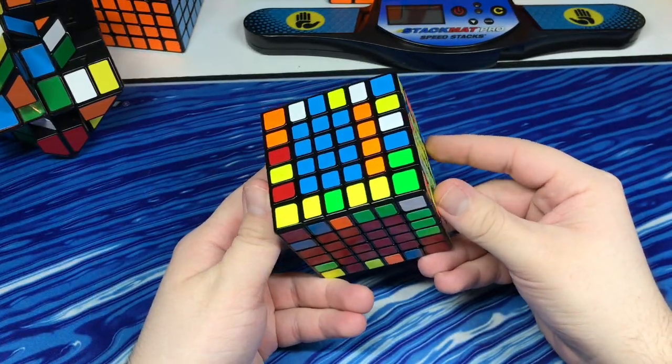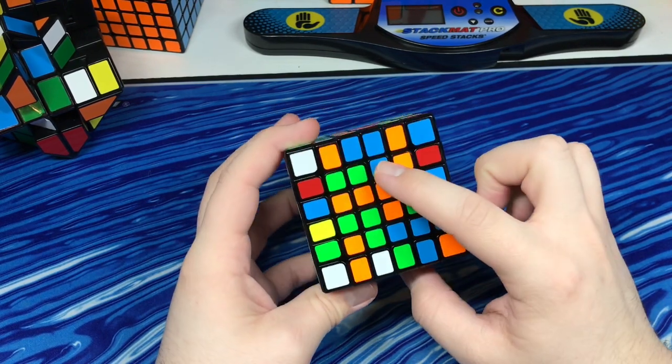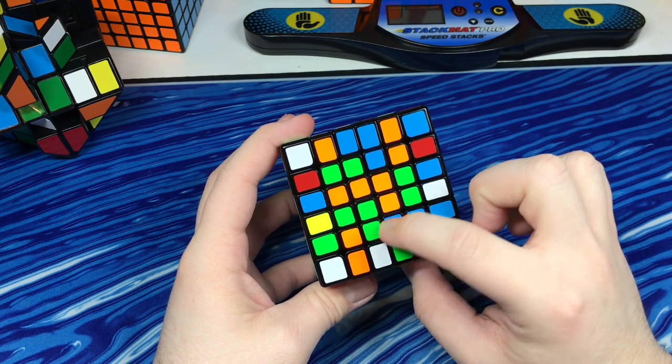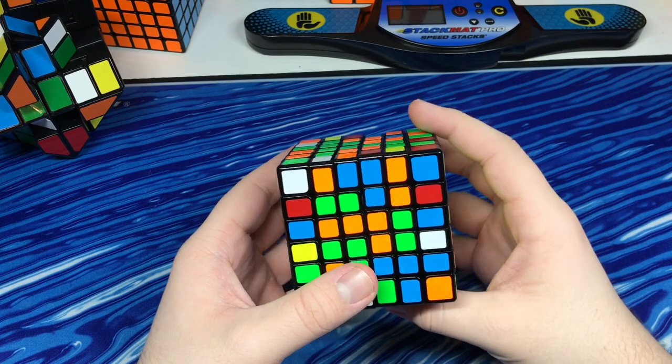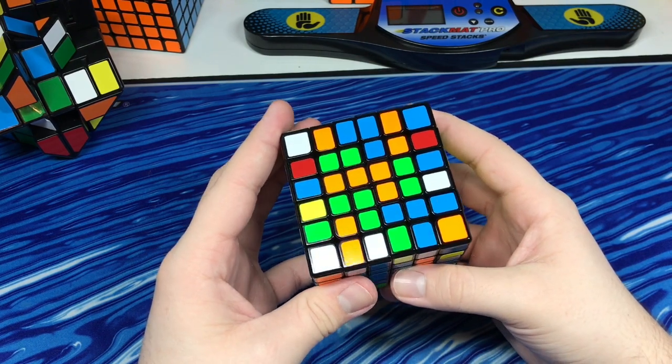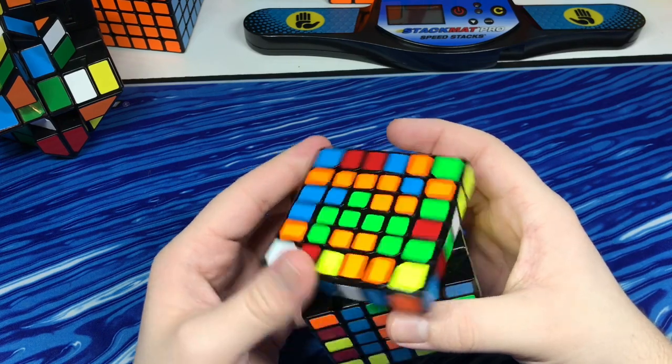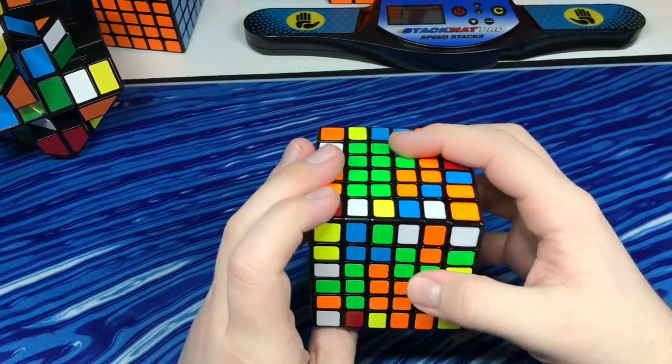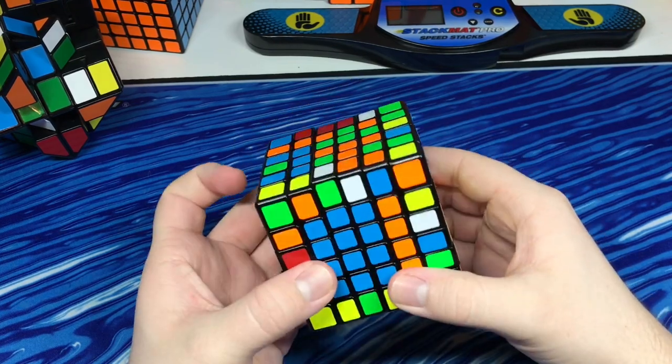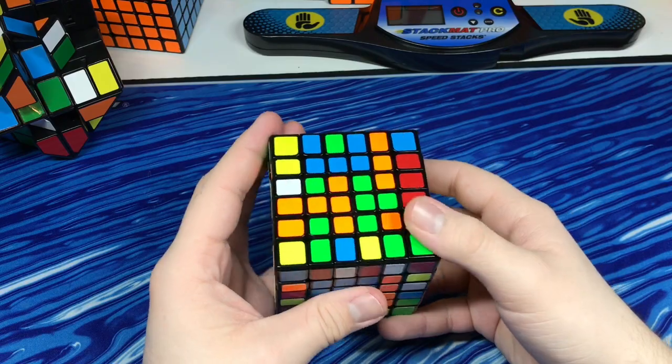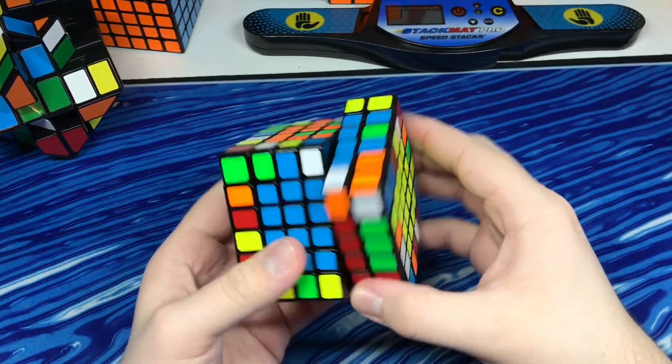Because I have the majority of the blue side solved, but this is kind of a tricky case. This last middle part here, this middle center piece, has to go here, but it's stuck here. What you have to do is, you have to move it over and insert it onto this other side. So then you can just bring it down, bring it over, and bring that up. So then all you have is that last bar.